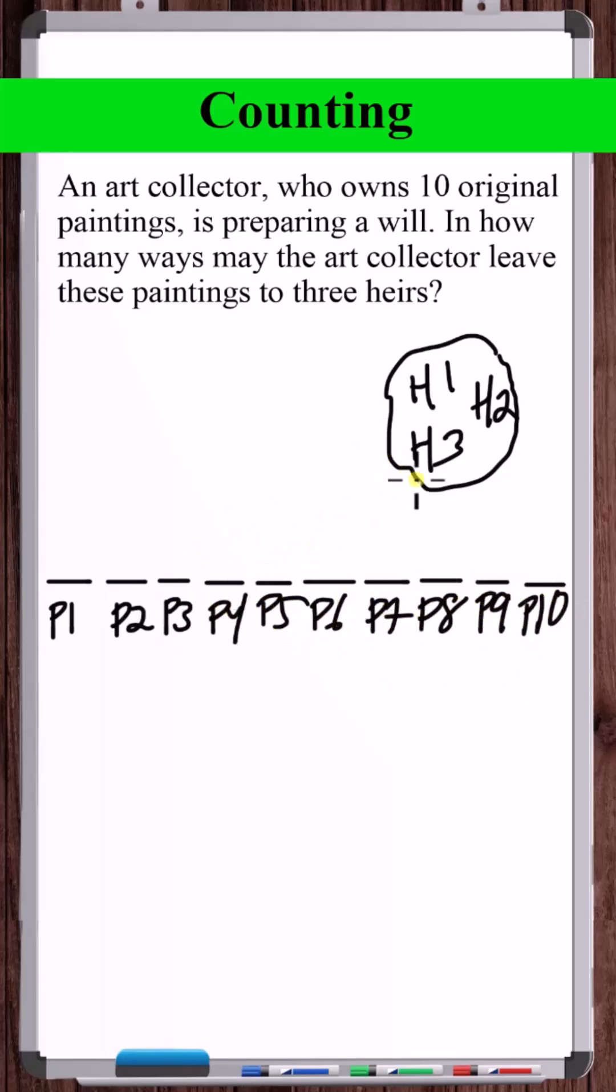Now we would definitely be pulling from this group with repetition. So once we choose like heir one here, we could choose heir one again. Heir one doesn't go away. This is all with repetition.